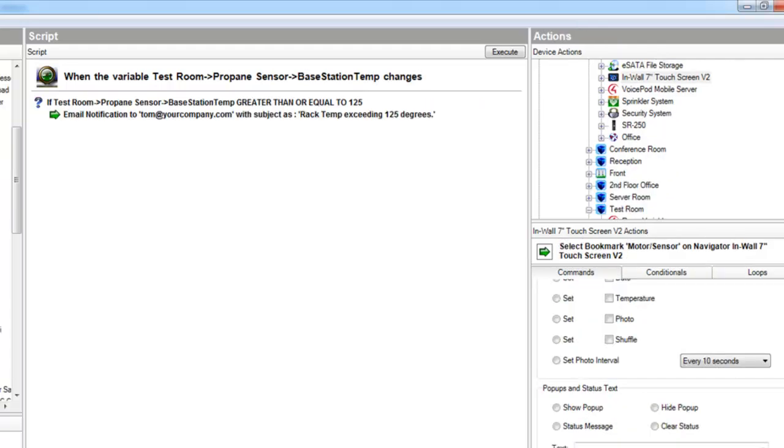In this last example, we are using a conditional to send an email to the Control 4 dealer if the rack temperature rises to 125 degrees or more. This is especially useful for a dealer to monitor the rack conditions.